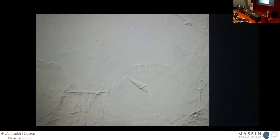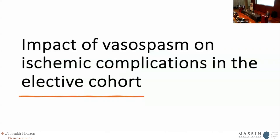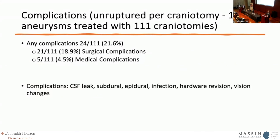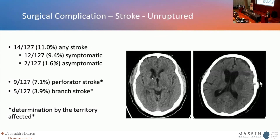Regarding the impact of ischemic complications, this is very difficult to untangle in an otherwise elective, unruptured population that is expected to do really well. If you roll in anything from a pressure ulcer to a UTI in the first 90 days, we had an 18% surgical complication rate. Looking specifically at neurologic complications, we had an 11% rate of stroke in hindsight, with 7% attributed to perforators — probably more specifically related to the primary clip.